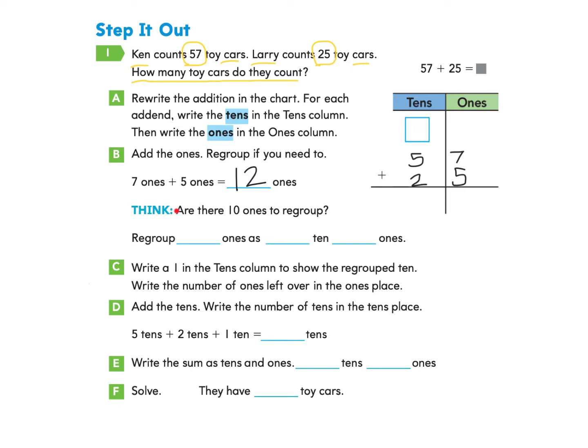Now it asks us to think, are there 10 ones to regroup? Do we see a 10 in this number? We do. There's one group of 10 and two ones when we have the number 12. So we're going to take that number 12, and I'm even going to just draw it right here. 1, 2, 3, 4, 5, 6, 7, 8, 9, 10, 11, 12. And we are going to regroup it. So we're going to take 10, and we're going to make this into a group of 10, and then we have 2 left over. So now we've taken 12, and we're going to change it to 1 group of 10 and 2 ones.